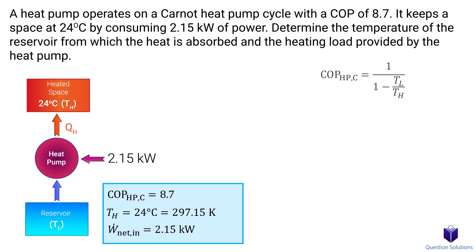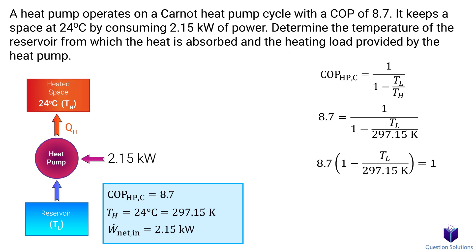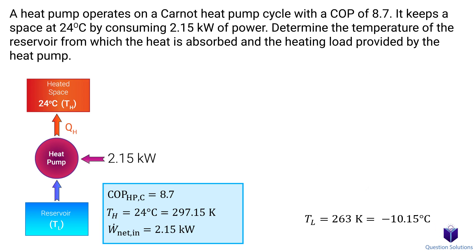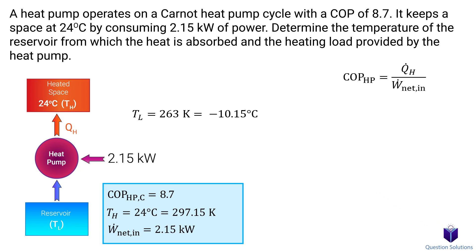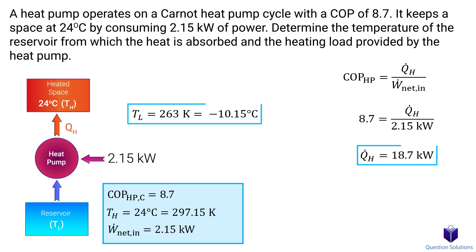We can use this equation to figure out TL. Let's plug our values in, tidy it up, and then solve for TL. To figure out QH, we can use this equation — it's the same as before, desired output divided by the required input. But in the case of heat pumps, our desired output is QH. Let's plug our values in. Solving gives us our answers.